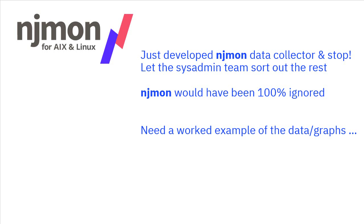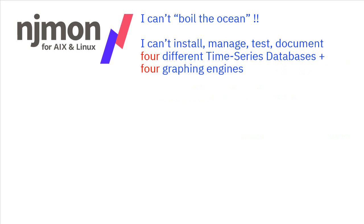I could have just developed the njmon data collector and stopped there, leaving it as a system admin problem to provide the rest of the plumbing and graphing. But I think njmon would have been completely ignored at that point. You need to see the eye candy — the output you can get from this — to warrant the effort of installing it. What I need is a worked example of the data and graphs. But I can't test, manage, and document four different time series databases and four different graphical engines — there's just not enough time in the day. This is a personal project in my own time, although I'm currently using it on a couple of IBM projects where it's proving very useful.